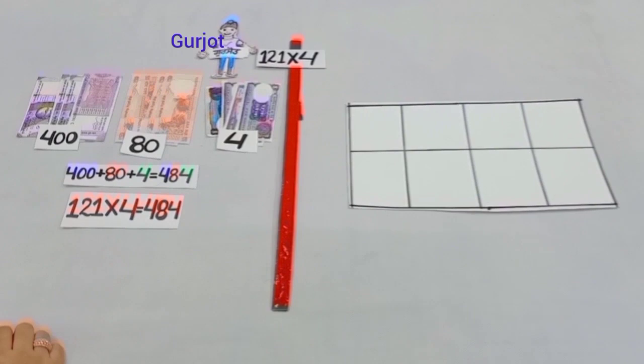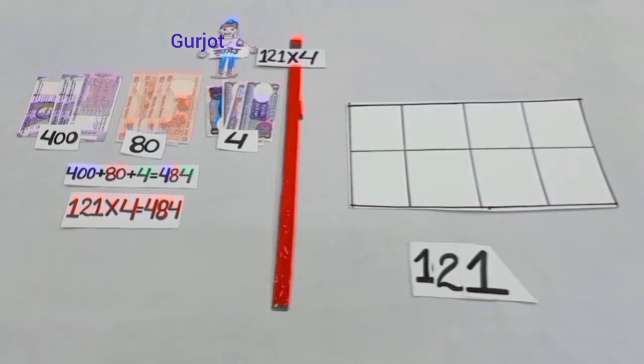Students, yesterday we solved 121 multiplied by 4 with the help of currency notes and we got the answer for our question that is 484. Today, we will solve the same sum in the writing form and here we will solve it with the help of place value cards.